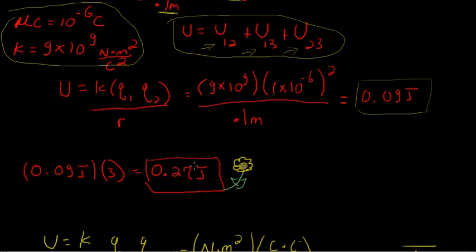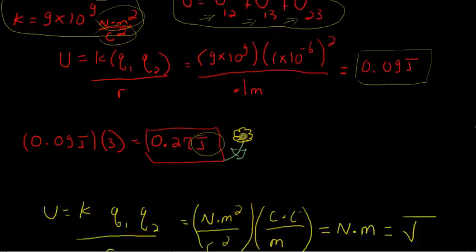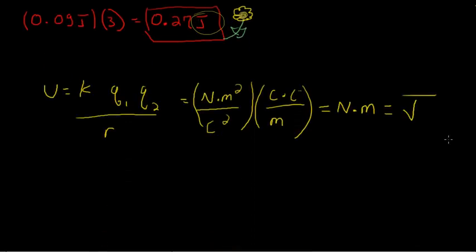Now why is this joules if you started out with coulombs and newton meters squared and coulombs squared? So if you take a look at that, that's also related to the definition. Your units on your K are newton times meters squared over coulombs squared. And then your Q1 and Q2 are both in coulombs and that's over meters.